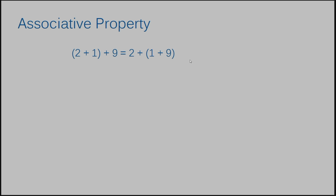Let me show you another example. I have seven times four times five. They started with seven and four being grouped. That might seem complicated because you're going to end up with 28, and you may not know what 28 times five is. That's why they switched the grouping — they decided to group the four and the five together first because that equals 20. It's going to be easier to multiply seven times 20 than five times 28. 20 is an easier number to work with because it ends in zero.